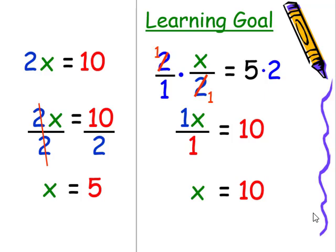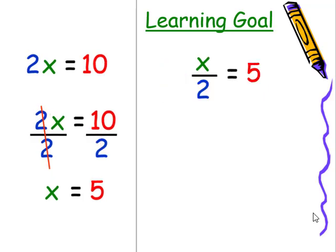Fortunately, we don't have to do all this work. All you actually have to do when we're dividing by a coefficient is just multiply both sides by 2. The twos will cancel, just like so, and we get x equals 10.